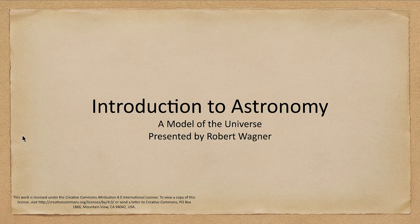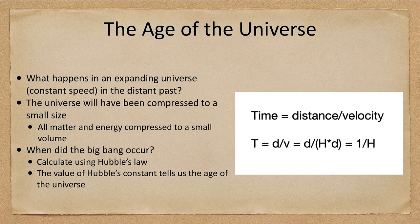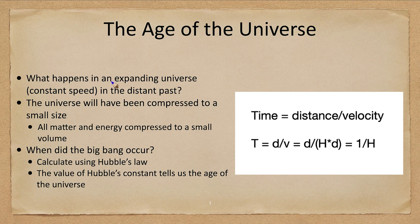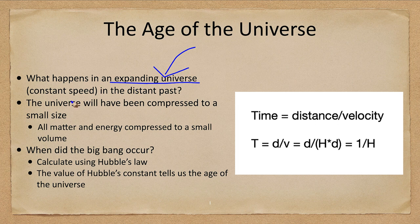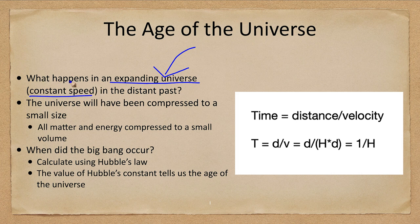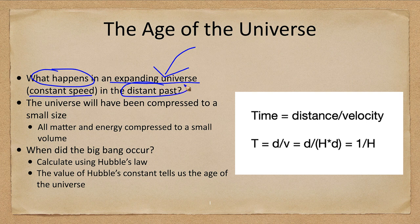So let's go ahead and start with what is the age of the universe? We know from previous lectures that we are in an expanding universe. We have observed the universe expansion. Let's right now assume that it's expanding at a constant speed. So what happens to an expanding universe in the distant past? Well, the universe will have been smaller, right?